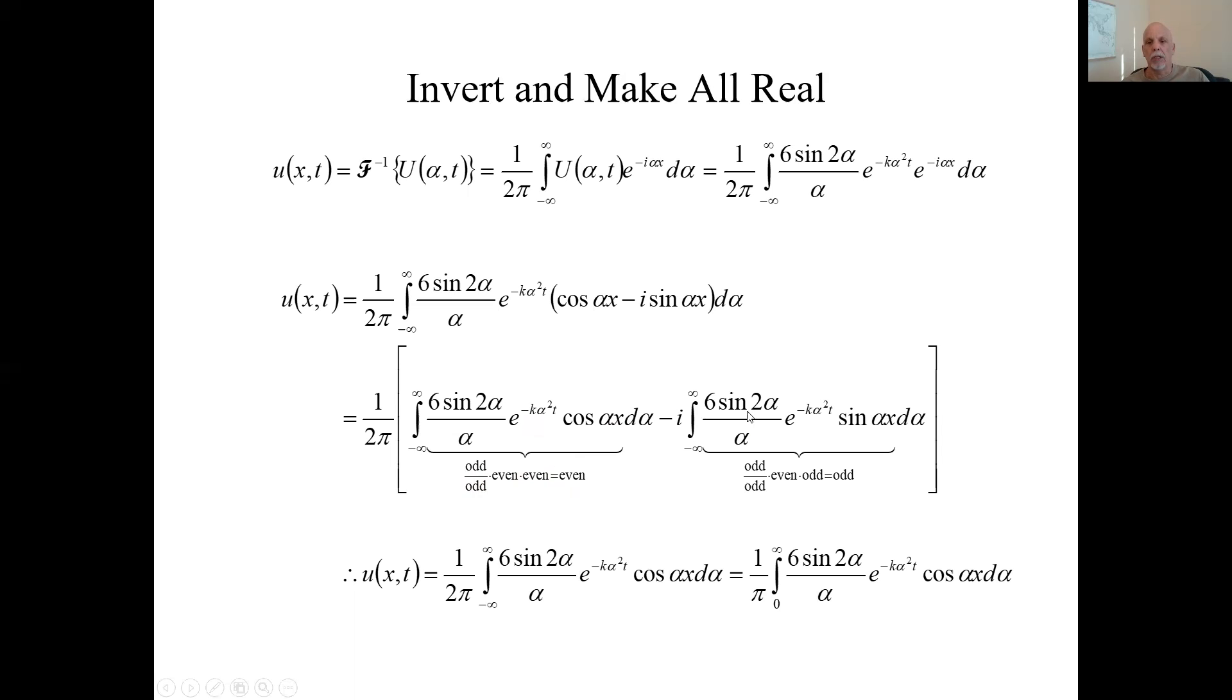Here on the other hand, you have odd over odd so that part's even. This part's even. The sine is odd. You have an even times even, which is even, then times an odd. Even times an odd is an odd. Over a symmetric interval, this whole thing goes away. It becomes zero. That's a double check that it's not just throw out the imaginary part. So I'm left with this part.